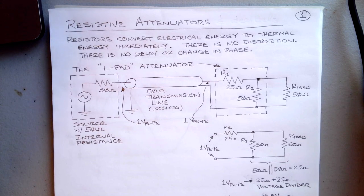Alright, back to ELE 210 circuit theory. Here's a topic I completely overlooked—there's actually two topics involved, but in this lecture we'll just do one: the idea of resistive attenuators. We know that resistors convert electrical energy to thermal energy immediately. As long as it's all resistance, there's no distortion, no delay or change of phase.